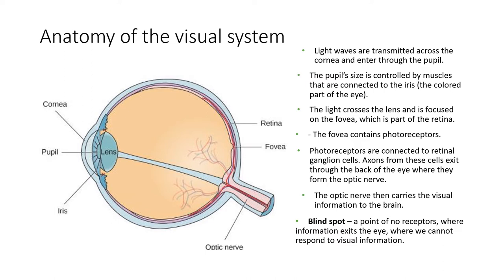The fovea, which is part of the retina, contains photoreceptors. Photoreceptors are visual receptor cells connected to retinal ganglion cells, and axons from these cells exit through the back of the eye where they form the optic nerve. This is a sensory process involving transduction — the conversion of stimulus energy into nerve impulses. The word 'axon' should remind you of neurons from an earlier module.